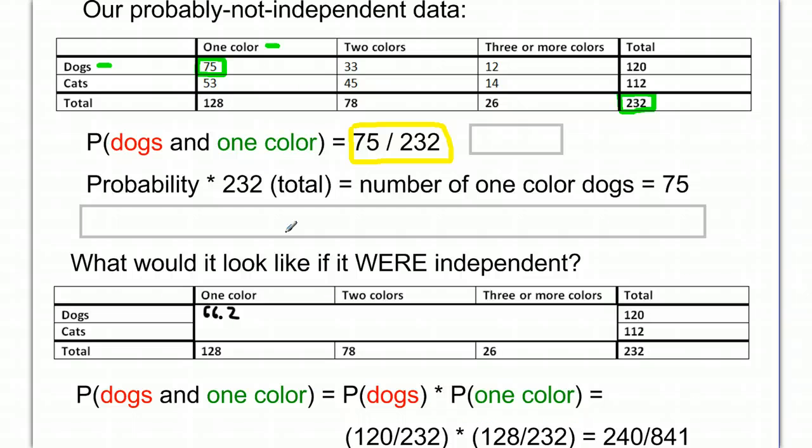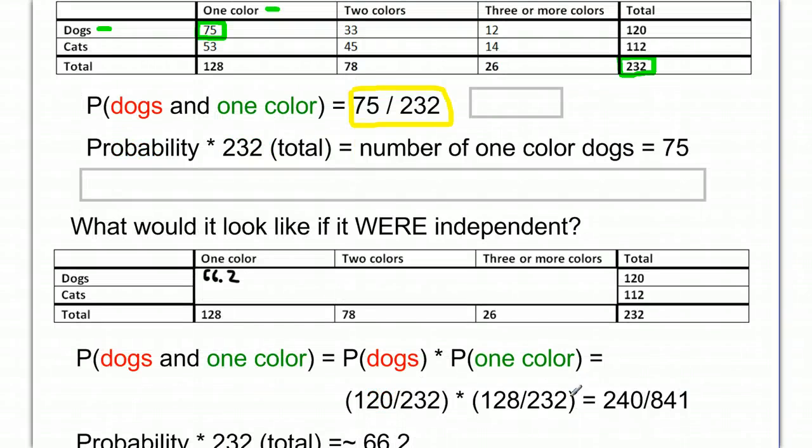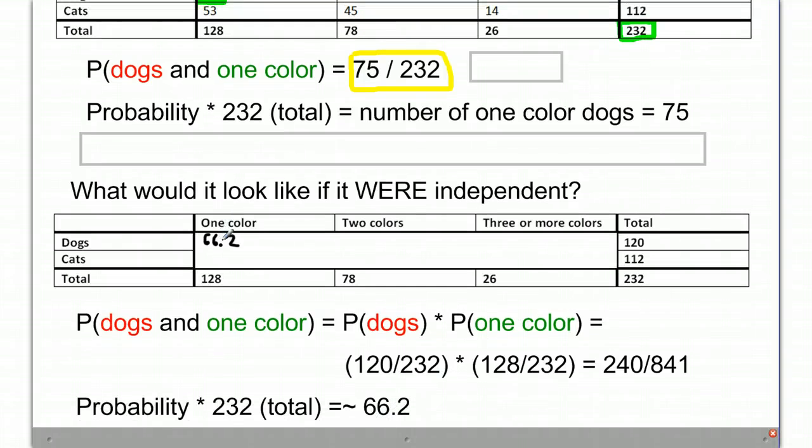Same idea here. We took our probability times the total number of animals we had to work with is 232. And we ended up getting 66.2. Now if you're looking at these numbers and you see that there are some mental shortcuts, there absolutely are. One of such mental shortcuts is to take this numerator here, 120, which corresponds to that number, and take this 128, which is the total down here,